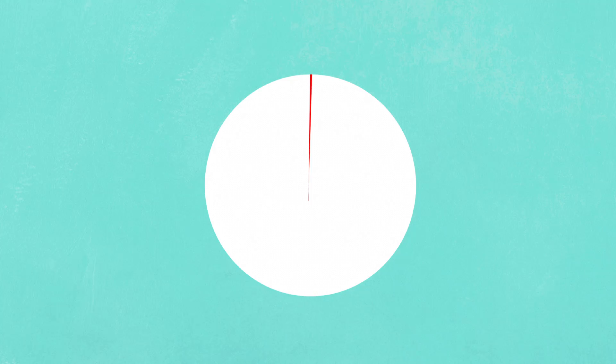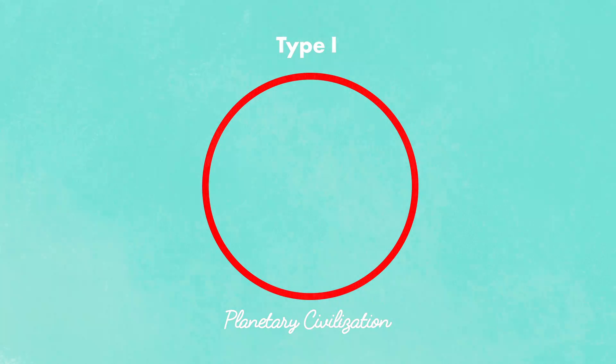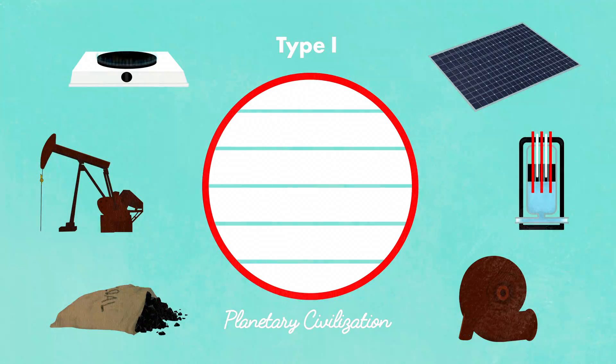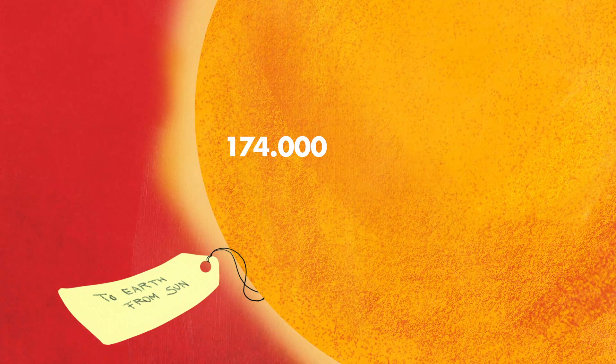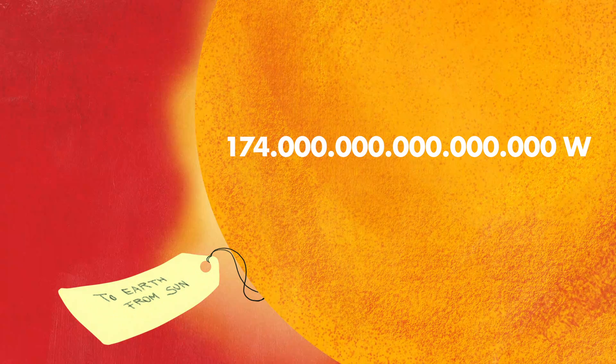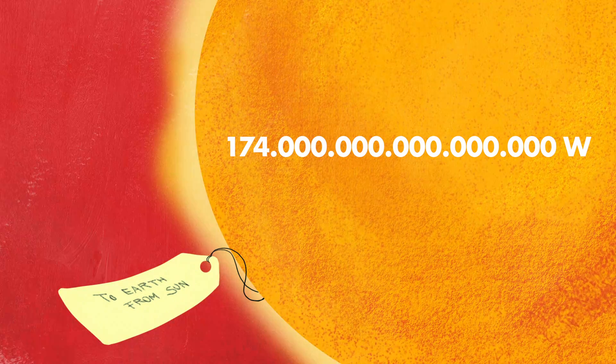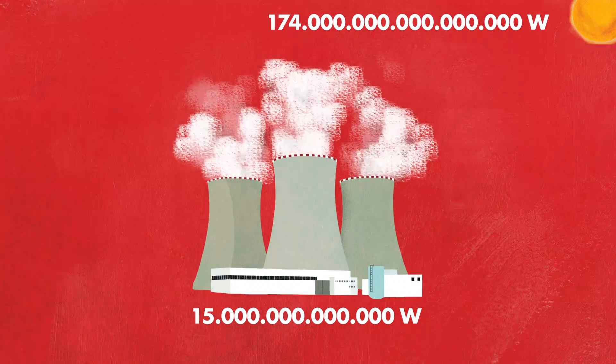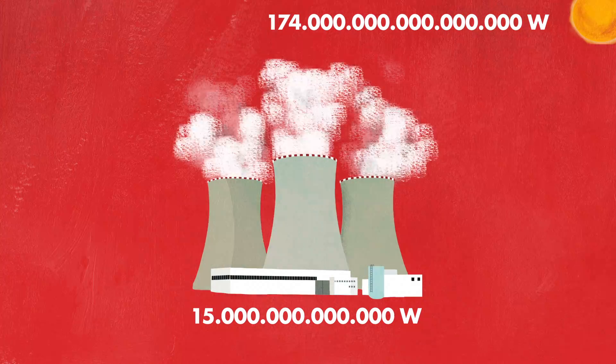The tiny amount of energy we currently consume pales next to what we leave untapped. A Type I, or planetary civilization, can access all the energy resources of its home planet. In our case, this is the 174,000 terawatts Earth receives from the Sun. We currently only harness about 15 terawatts of it, mostly by burning solar energy stored in fossil fuels.